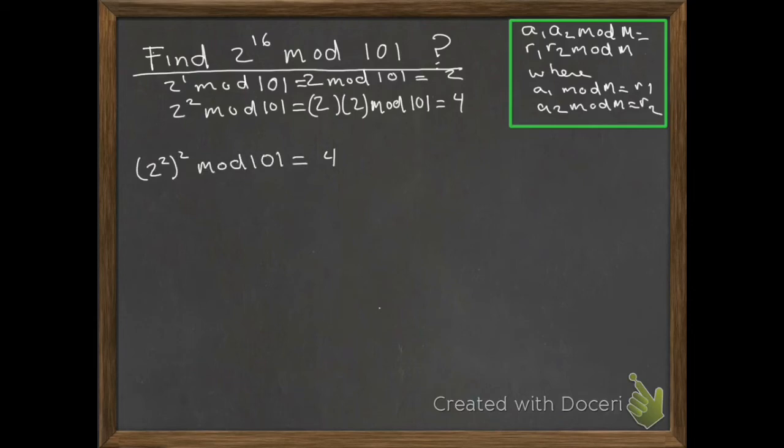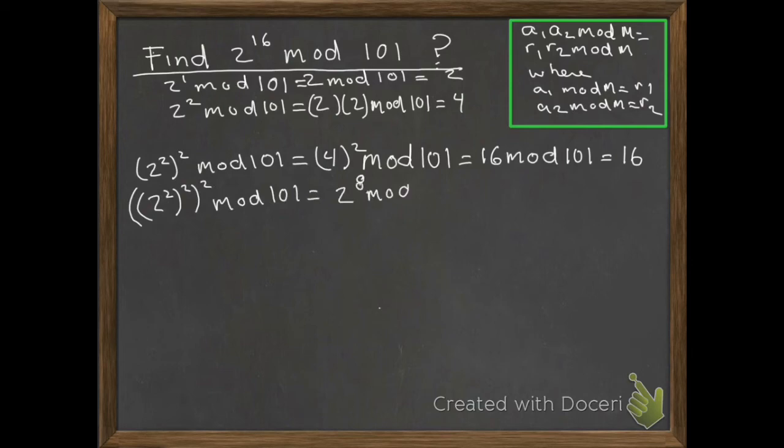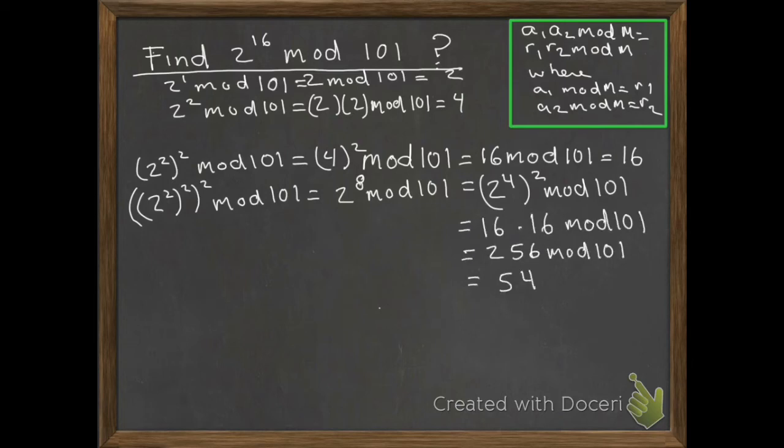We square again: (2^2)^2 mod 101, that's 4^2 mod 101, which equals 16. We square one more time: (2^4)^2 mod 101, which equals 2^8 mod 101. We calculate that and get 54.